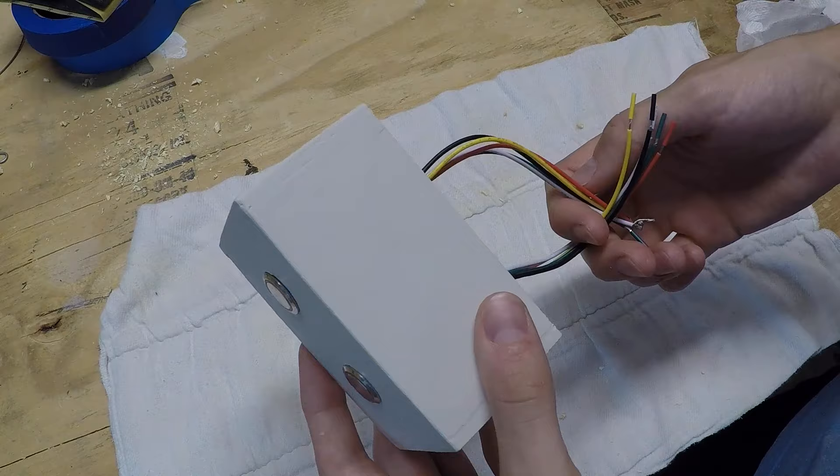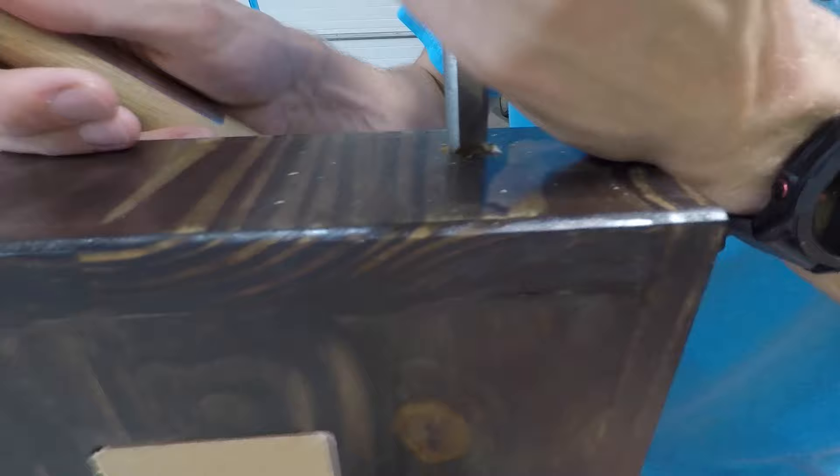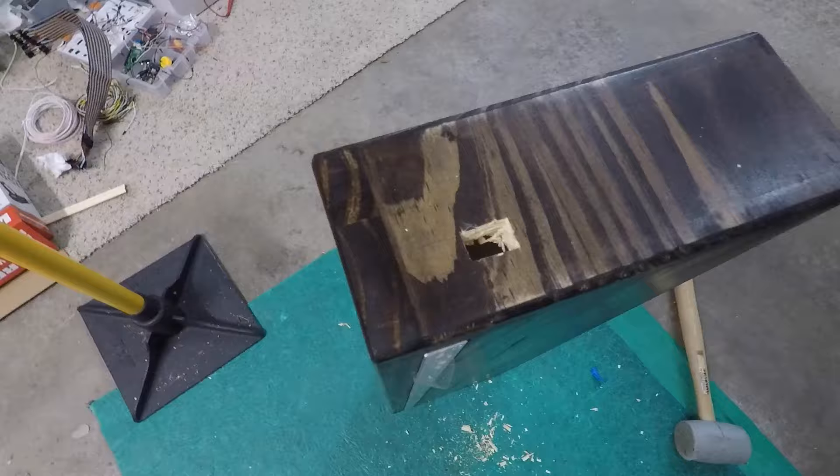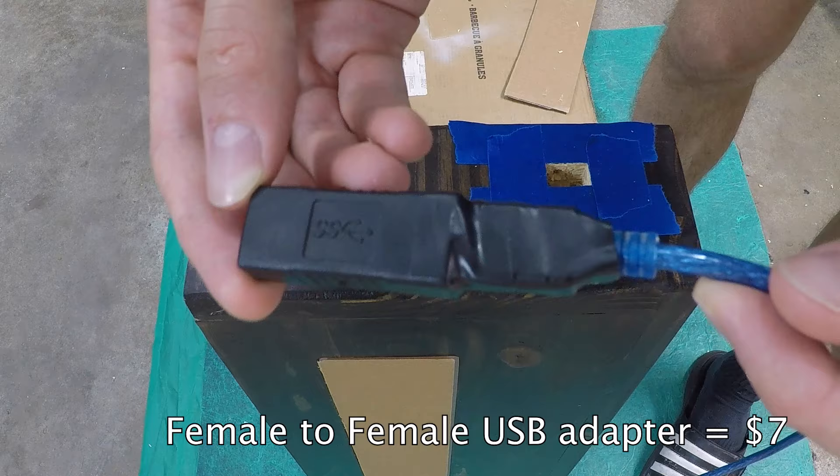Now the Arduino that is going to be running the LEDs is going to be inside the floating shelf. I do want to be able to reprogram it from time to time though if I want to change the color of the lights. So I'm going to chisel out this slot and then have an extension that I'm going to put in the side.